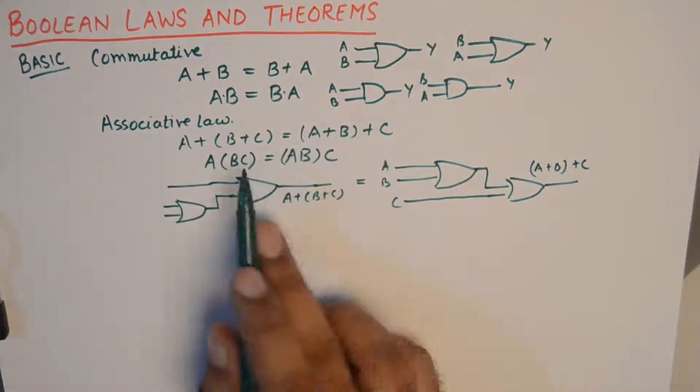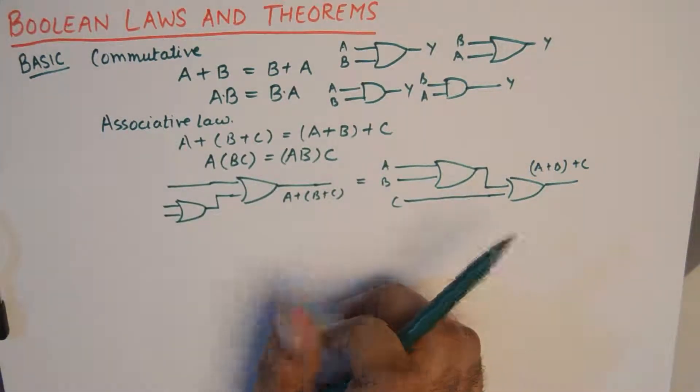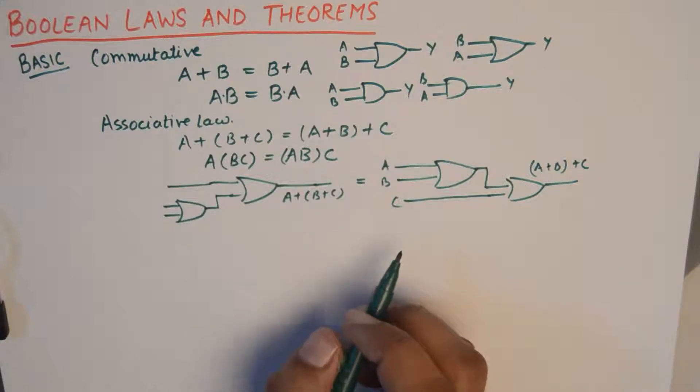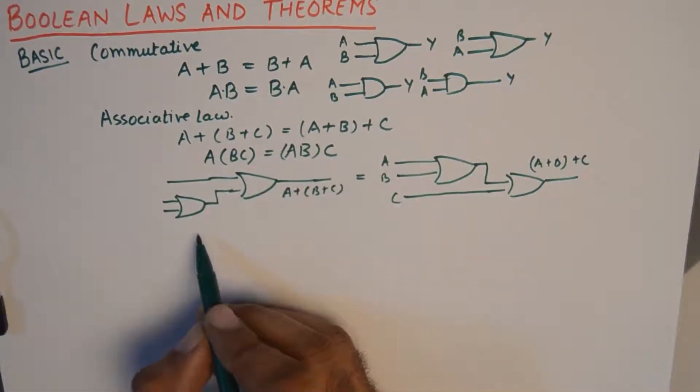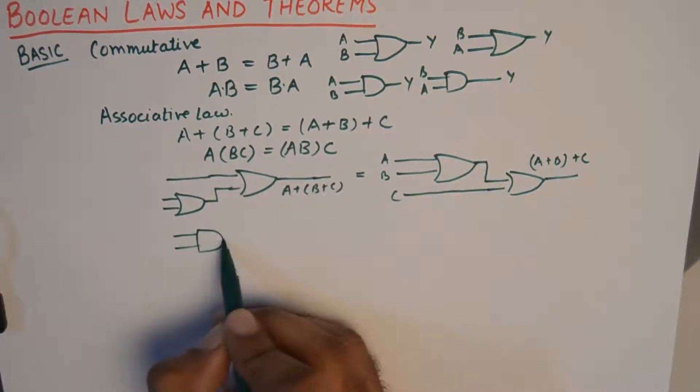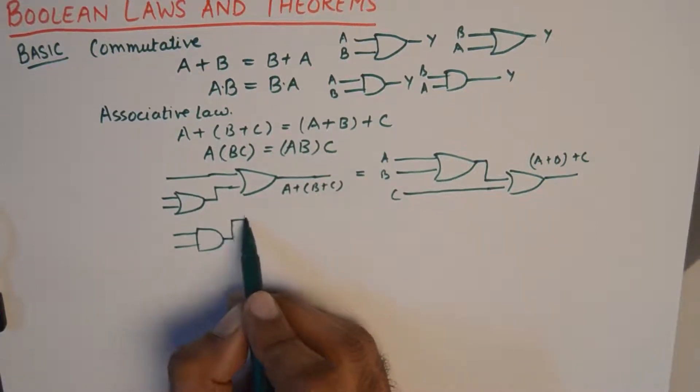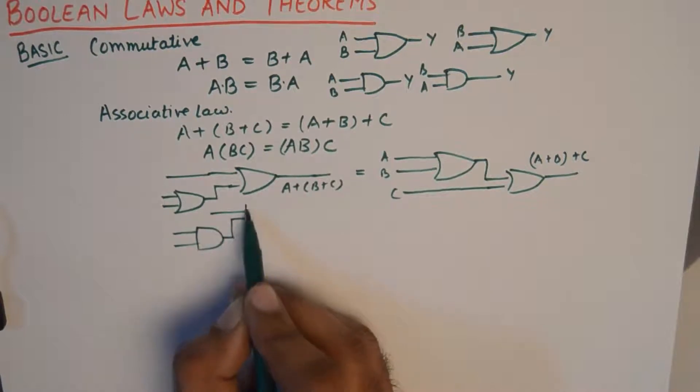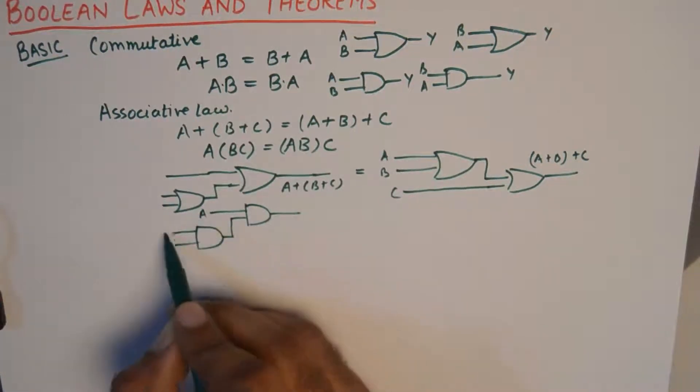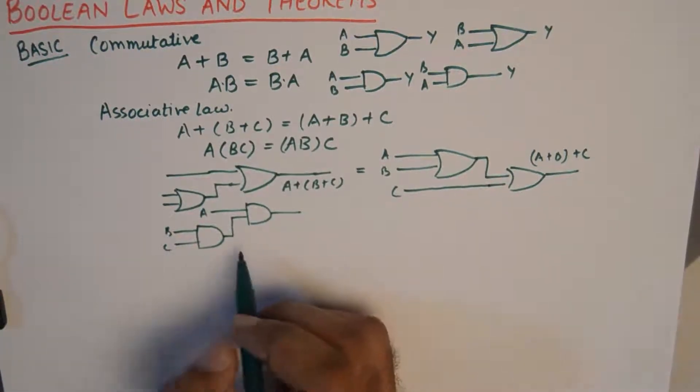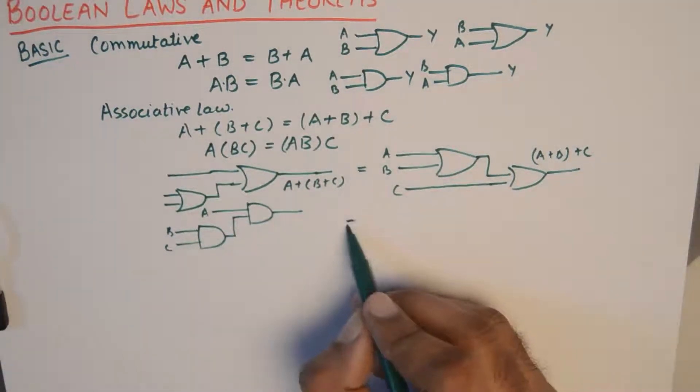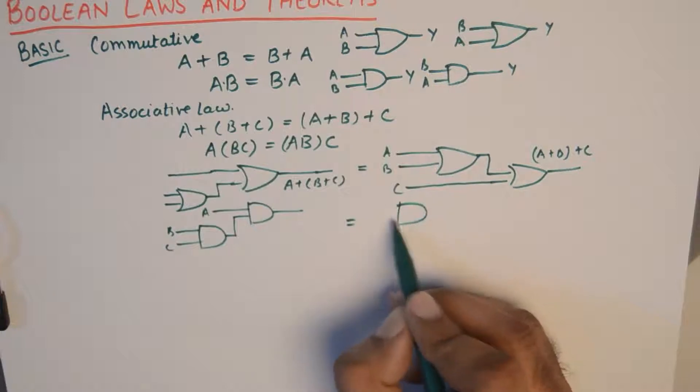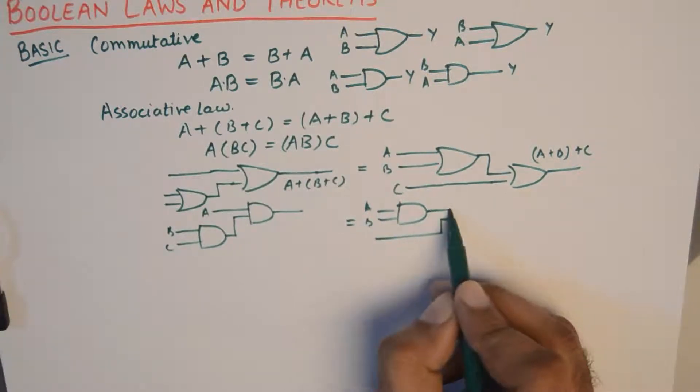So even if you check it using the truth tables it will hold true. And similarly the multiplicative version would say that if B and C are ANDed first and then A is ANDed to them later on, that will be equivalent to A and B ANDed first and then C is ANDed to them.